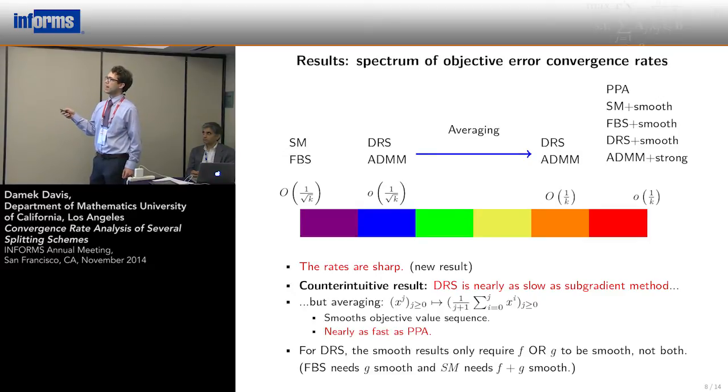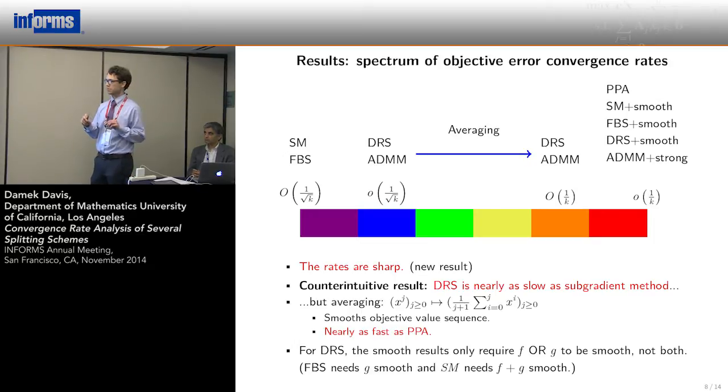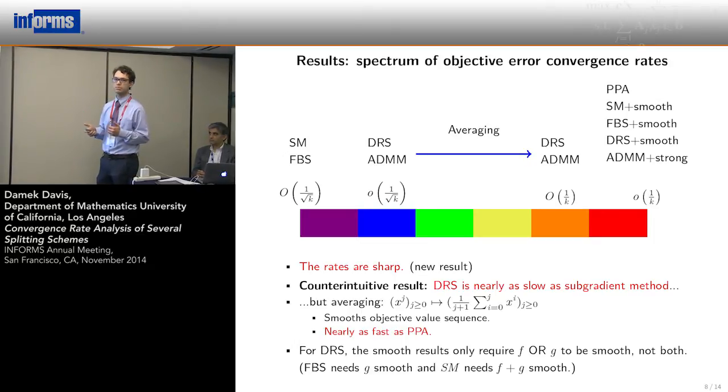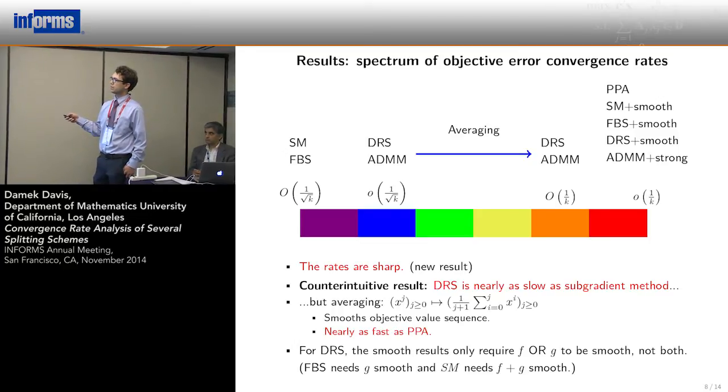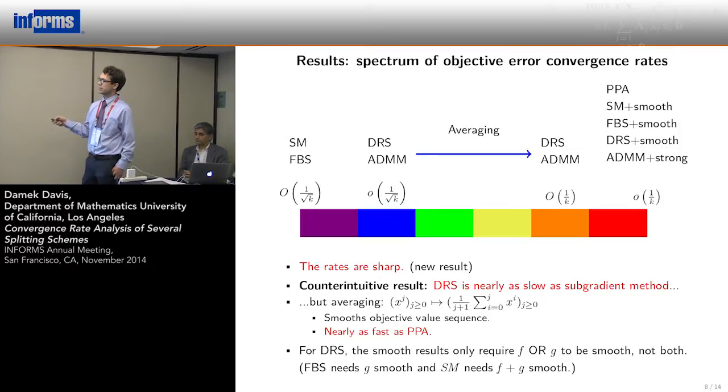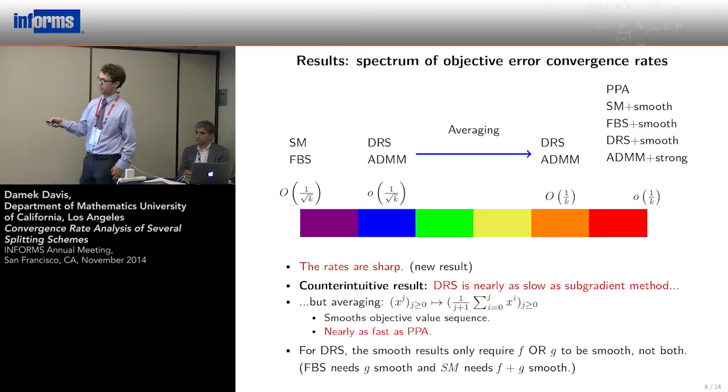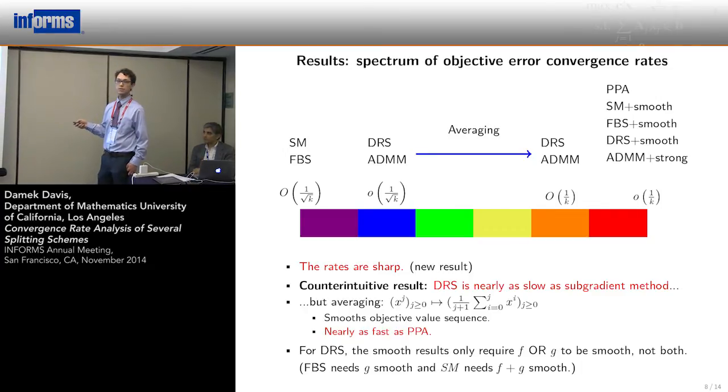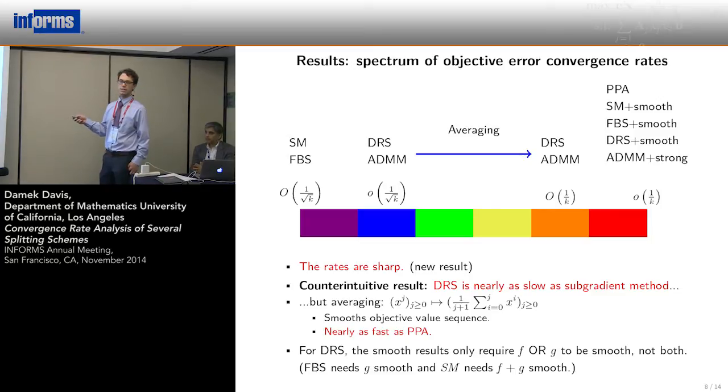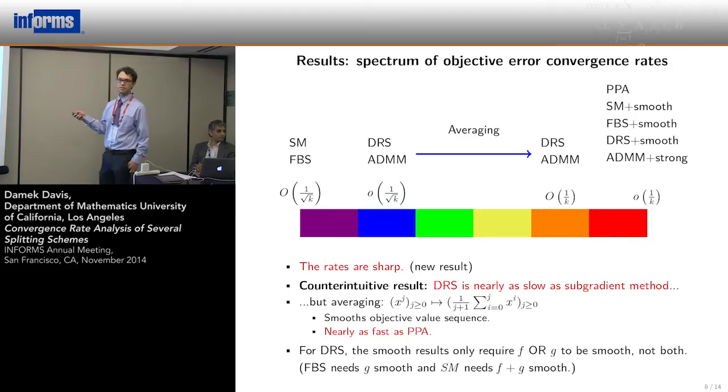This is almost as fast as the proximal point algorithm, which has this little o of 1 over K rate. Remember this proximal point algorithm had to evaluate a variational problem almost as difficult as minimizing f plus g directly. Instead, Douglas-Rachford splitting splits these two problems and uses two different proximal operators independently. We also have smooth rates. If you add any smoothness to Douglas-Rachford splitting, you increase the rate to little o of 1 over K. Forward-backward splitting generally requires a bound on the Lipschitz constant of the gradient. Douglas-Rachford splitting does not need any of that information.